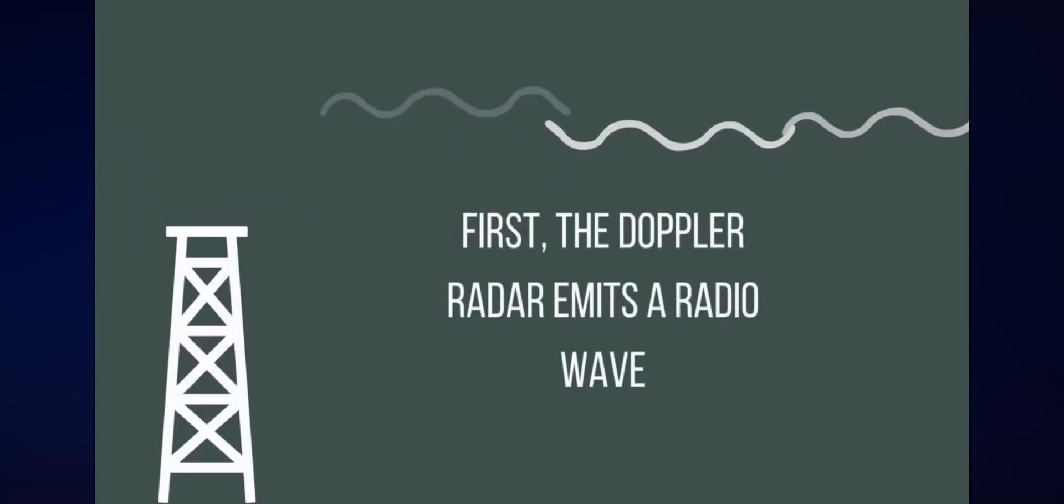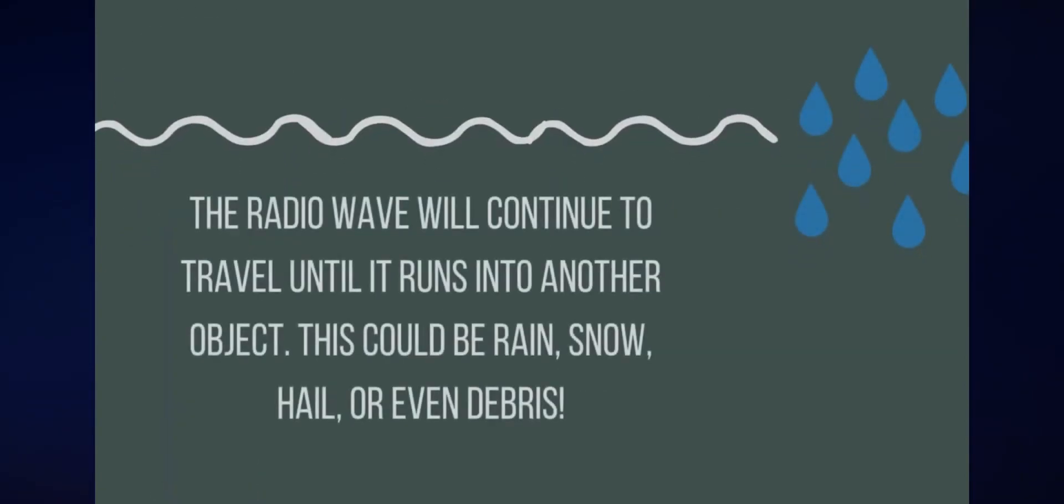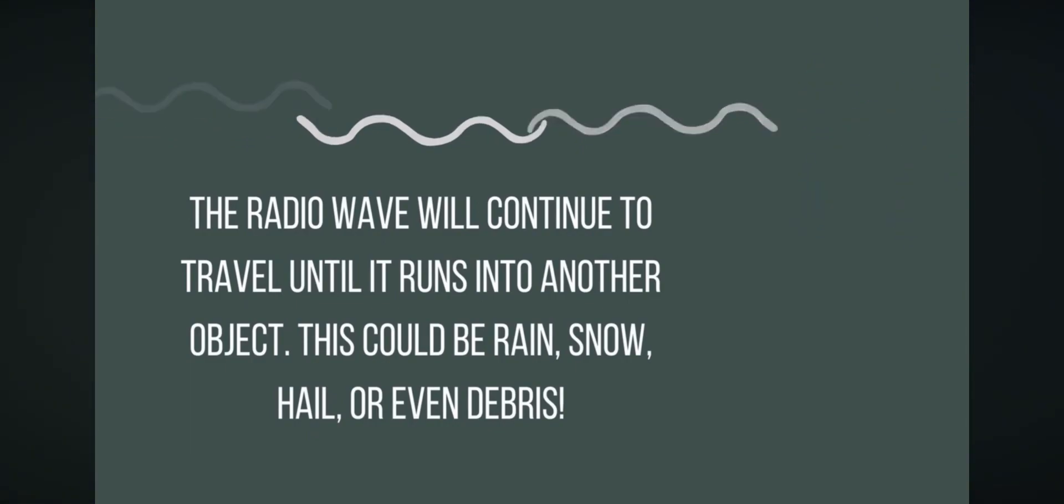The Doppler radar emits a radio wave. This radio wave will continue to travel until it runs into another object. This could be rain, snow, hail, or even debris.